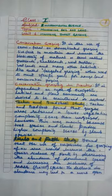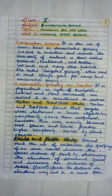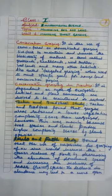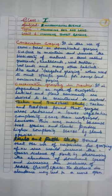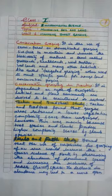Conservation grazing is the use of semi-feral or domesticated grazing livestock to maintain and increase the biodiversity of natural or semi-natural grasslands, heathlands, wood pastures, wetlands, and many other habitats. It is also called targeted grazing. When used to meet specific goals for rangeland conservation, grazing is generally less intensive than practices such as prescribed burning, but still needs to be managed to ensure that overgrazing does not occur.